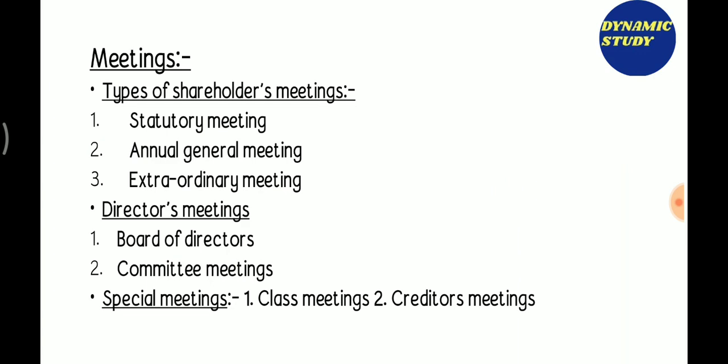We have two topics already covered: Kinds of Companies and Incorporation of a Company. Today we start the third topic, that is Meetings of Company. There are two main categories. First is Shareholders Meetings, which are three types: Statutory Meeting, Annual General Meeting, and Extraordinary Meeting. Second type includes Board of Directors Meeting and Committee Meeting.